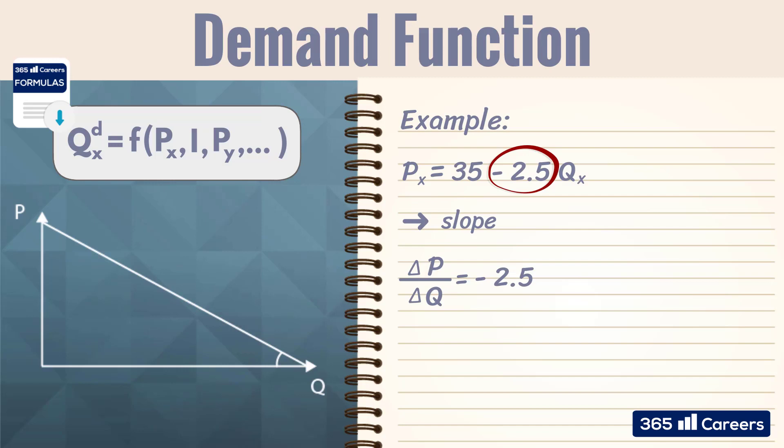The slope of the demand curve, delta p divided by delta q, gives us a good indicator of how price and quantity are related to each other in measurement units. If the price is $2.5 lower, that will increase the demand by one unit.